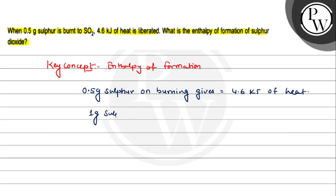1 gram sulfur on burning gives 4.6 divided by 0.5 kJ of heat. Now since sulfur's molecular weight is 32 grams, how much will 32 grams give? Let's calculate this.